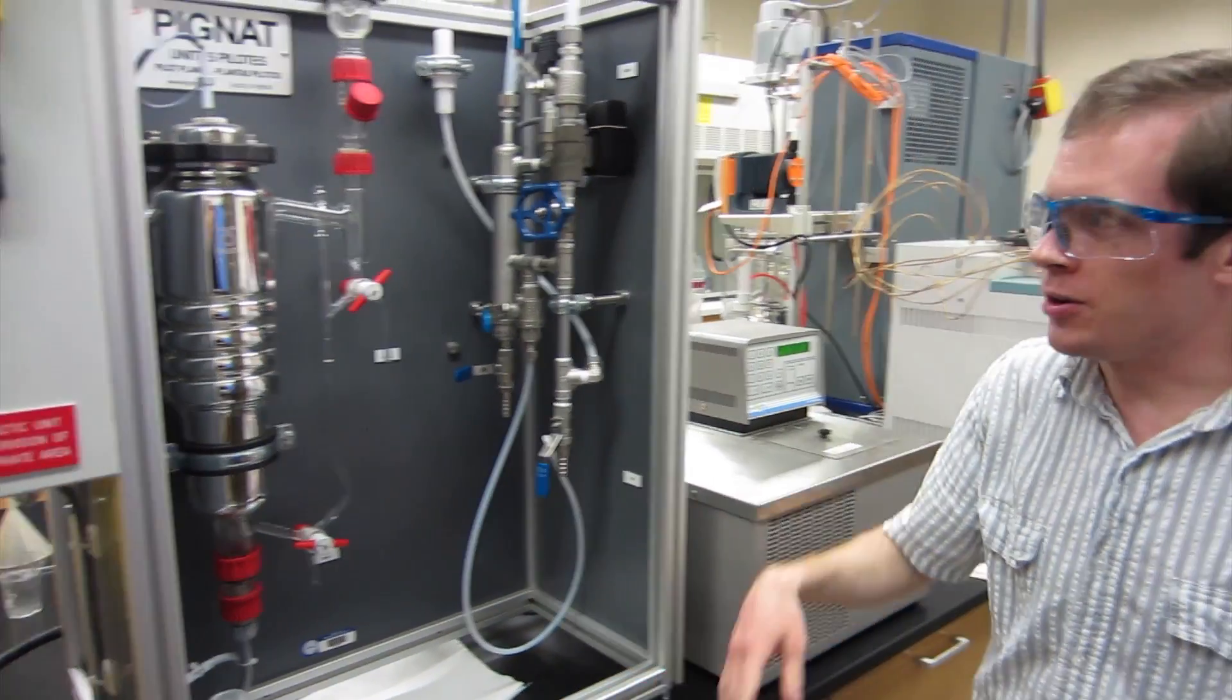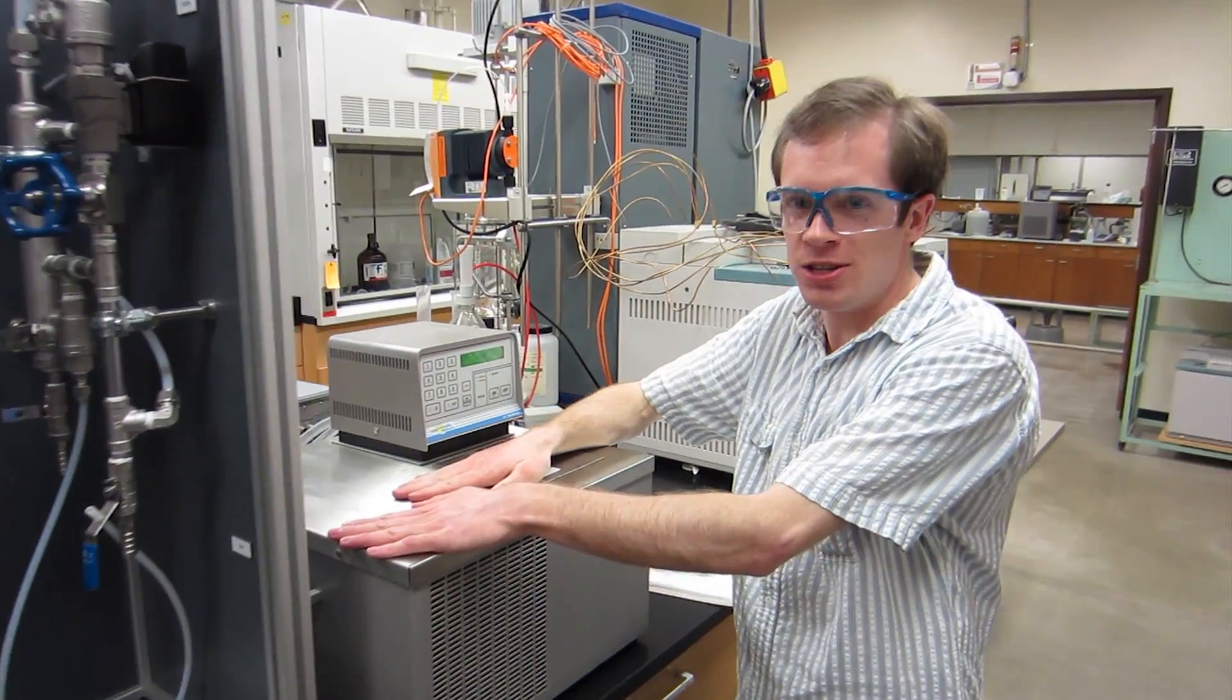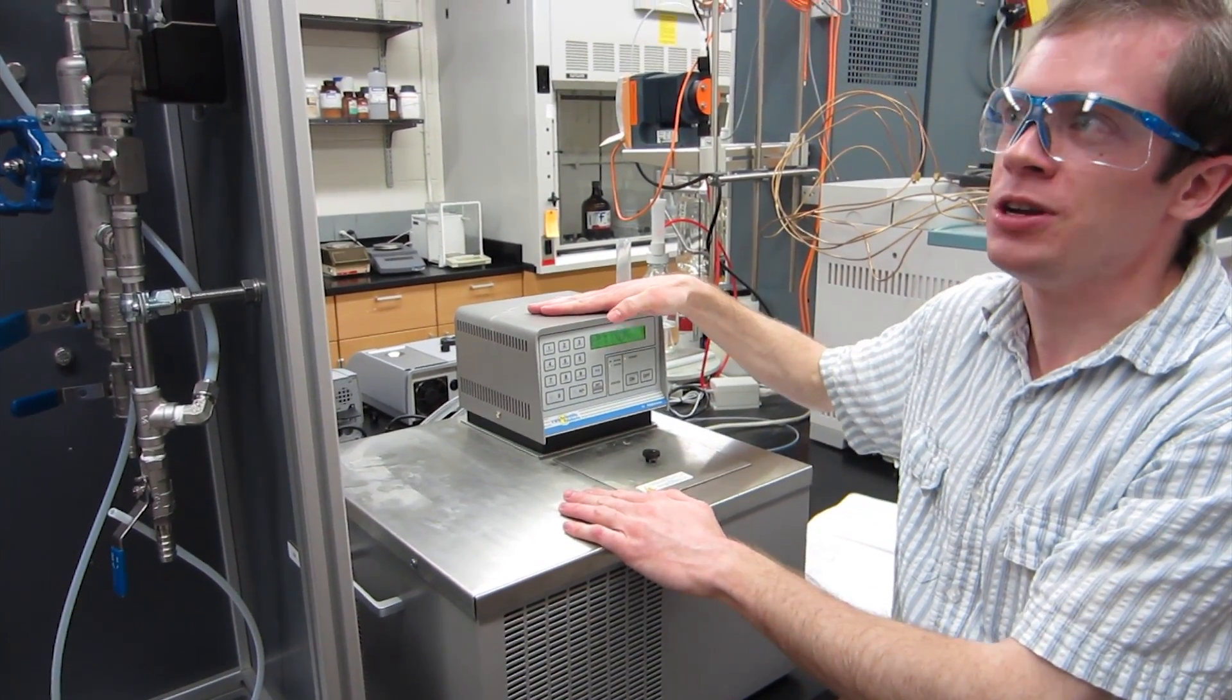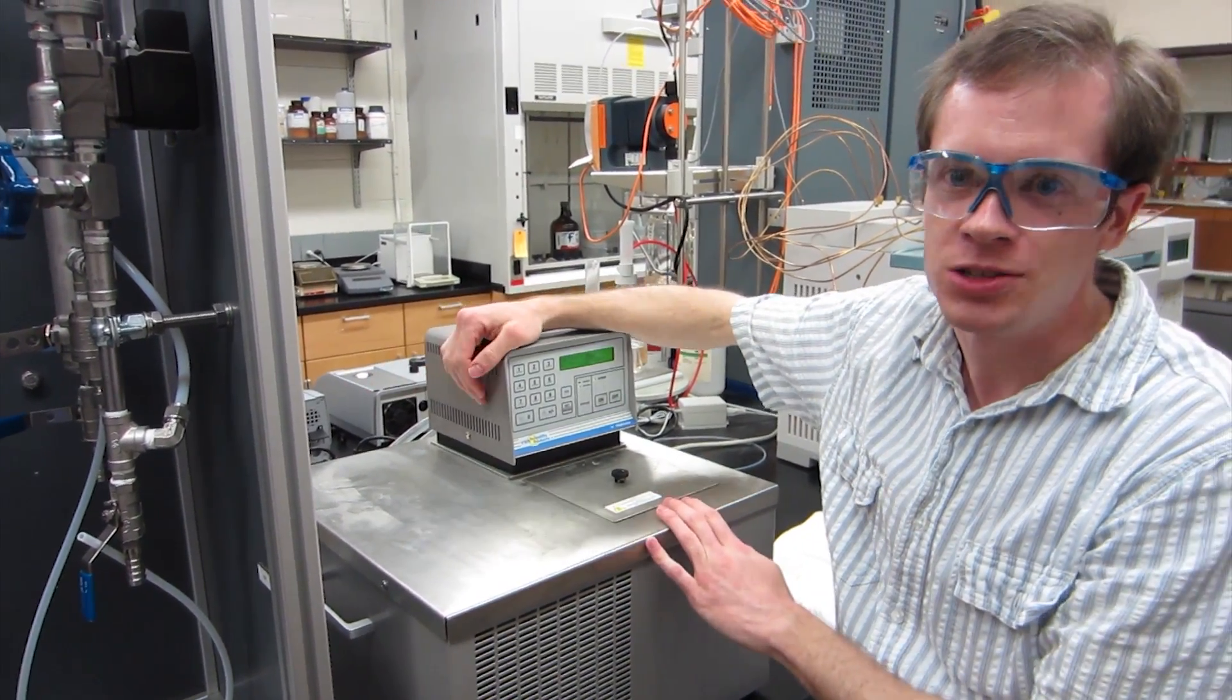Now to get this thing started, first we need to turn on the cooling unit which is this bad boy right here. We just turn it on and it's already set to 10 degrees which is where we need our condenser to be operating.